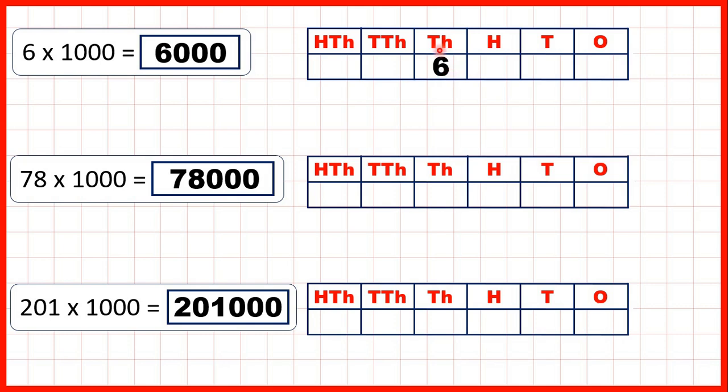So now the six has moved to our thousands column so we need zeros in our hundreds, tens, and ones to make it clear that the six stands for six thousands.